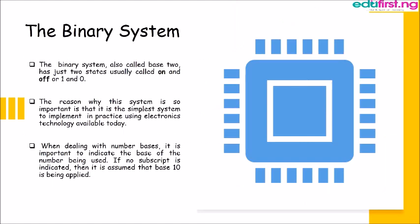The binary system. The binary system, also called base 2, has just two states usually called on and off or 1 and 0. The reason why this system is so important is that it is the simplest system to implement in practice using electronics technology available today.